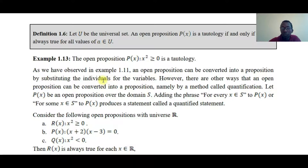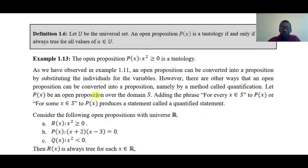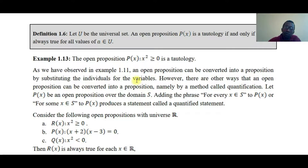An open proposition can be converted into a proposition by substituting individuals for the variables. However, there are other ways an open proposition can be converted into a proposition, namely quantification. Let p(x) be an open proposition over the domain S. Adding the phrase 'for every x element of S, p(x)' or 'for some x, p(x)' produces a statement called a quantified proposition.